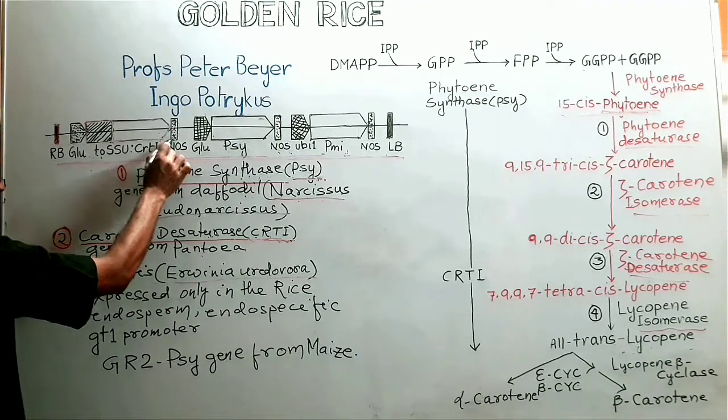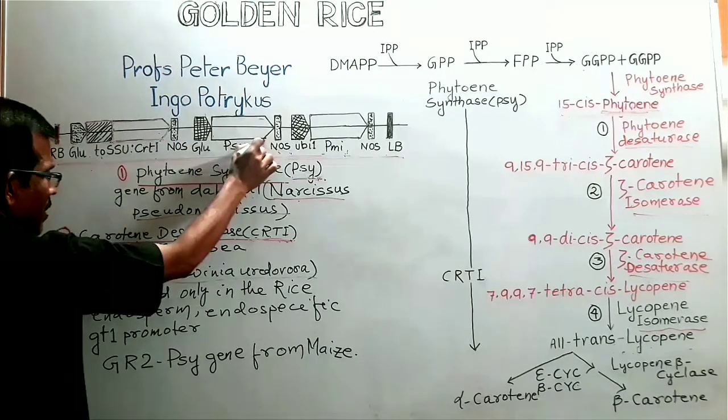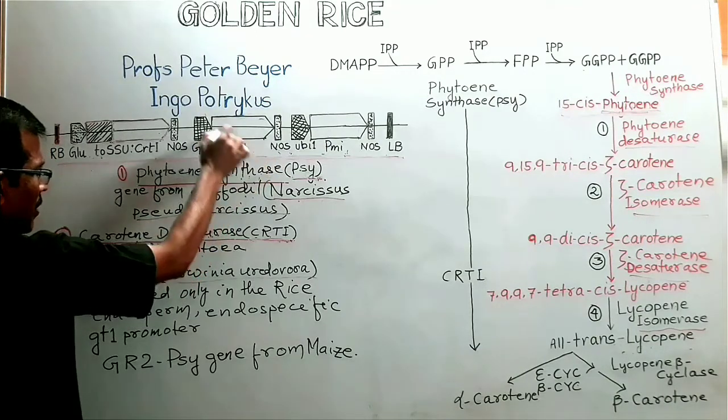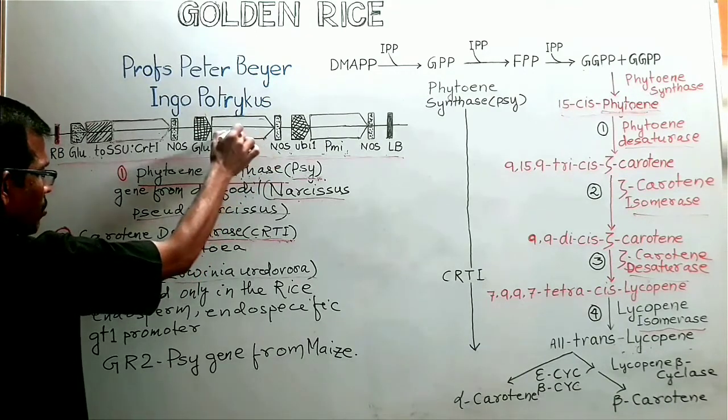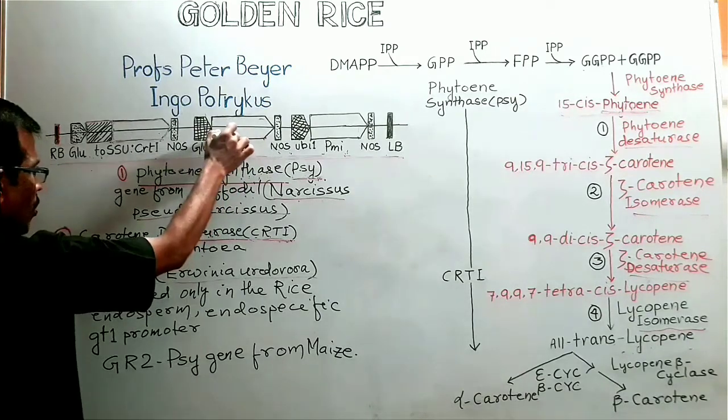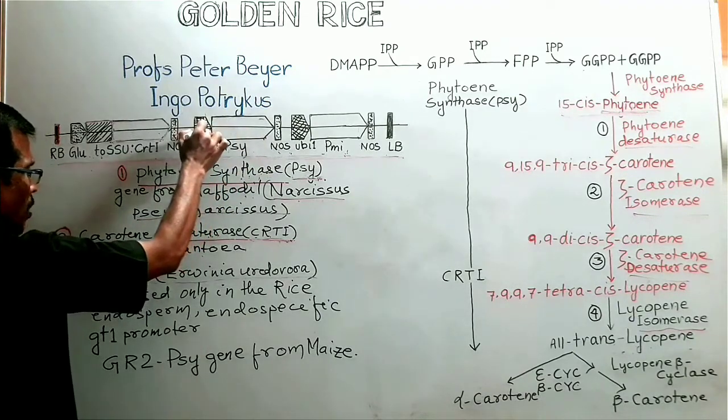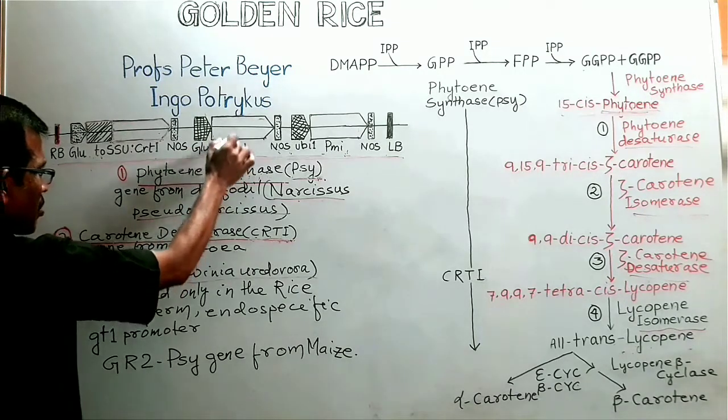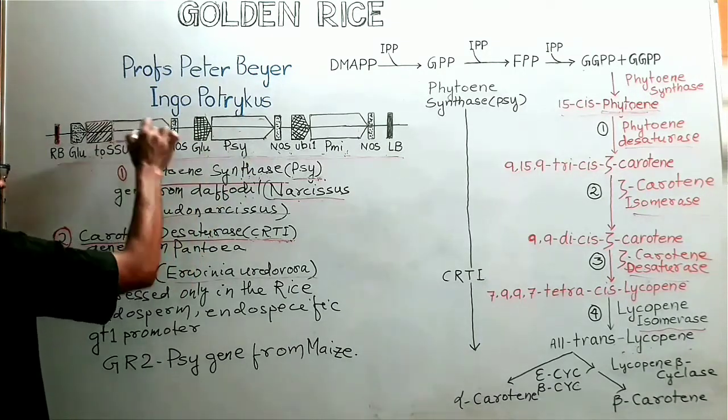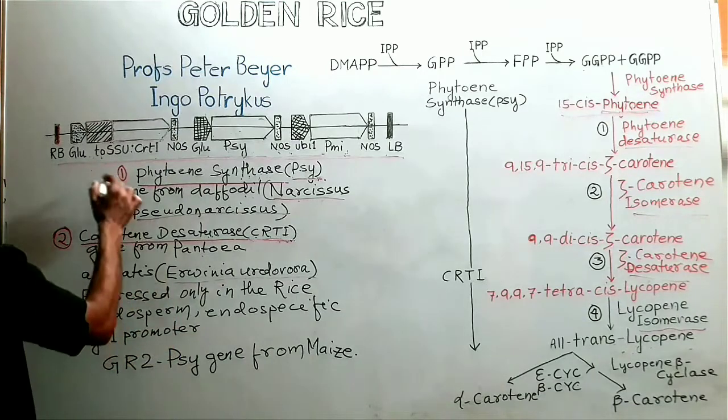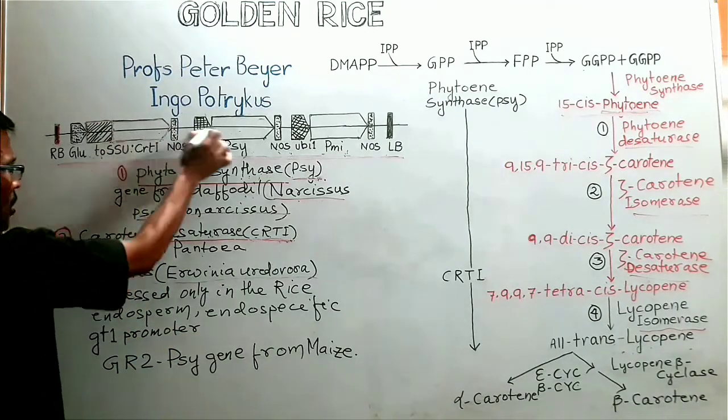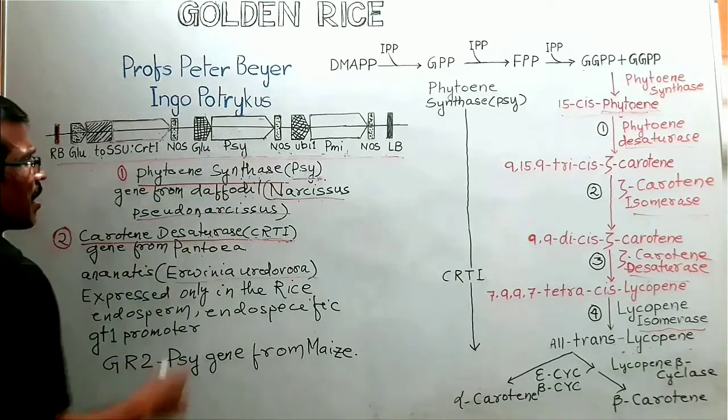After this sequence, the second transgene is present. Second transgene is PSY gene. The PSY gene is also placed under the control of rice endosperm-specific glutelin promoter. By placing these two genes under the expression of rice endosperm-specific glutelin promoter, these two genes are expressed in the rice endosperm.